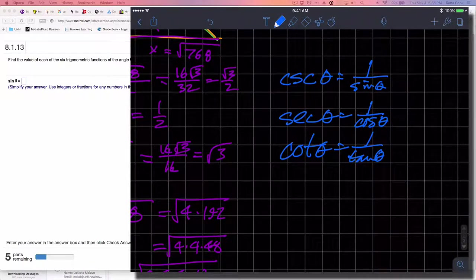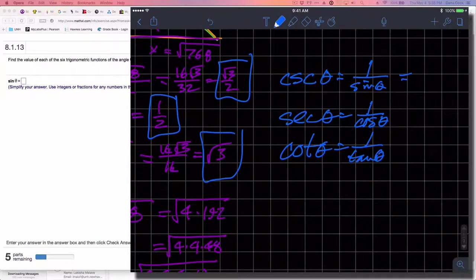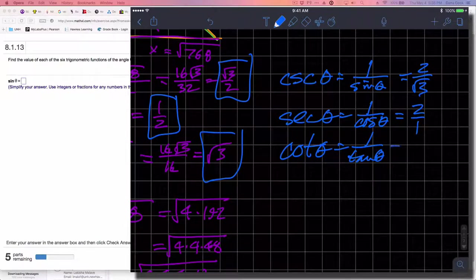I would just take these and execute their reciprocal, so that I get 2 over radical 3. This one I have 2 over 1, and this one I have 1 over radical 3.